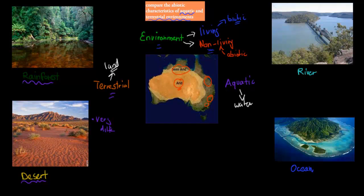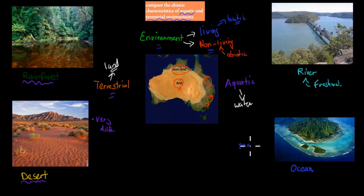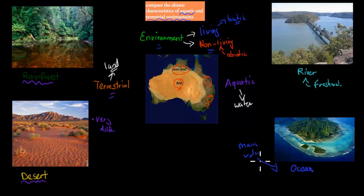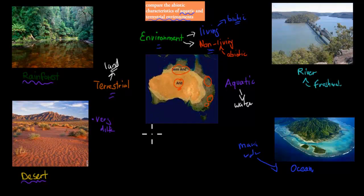Aquatic obviously means water. We have rivers, which are fresh water — for example, this is the Hawkesbury River right here. These are very different to your marine environments, your salty environments, like your oceans. When we think about environments, they're not all the same — they all have different types of living and non-living things. Aquatic means watery environments, terrestrial environments are land environments, and the environment itself is all living and non-living things in that area.